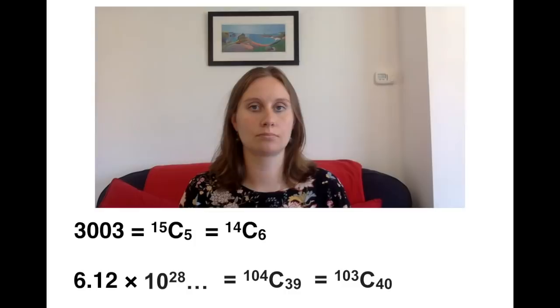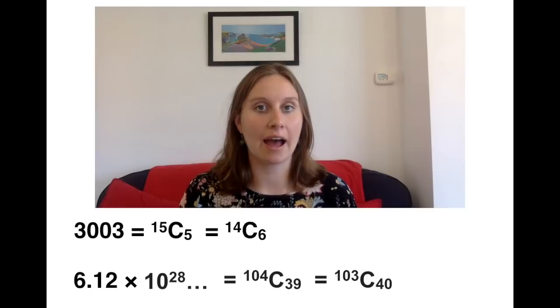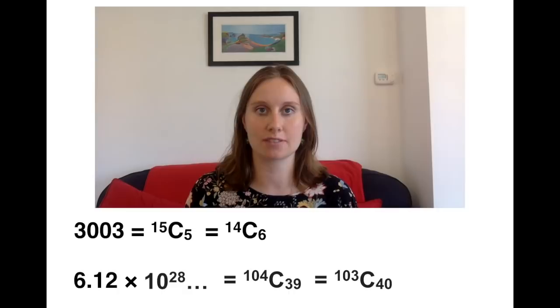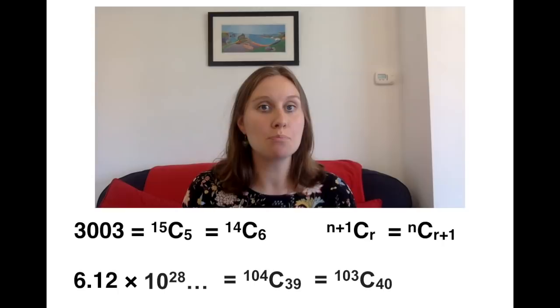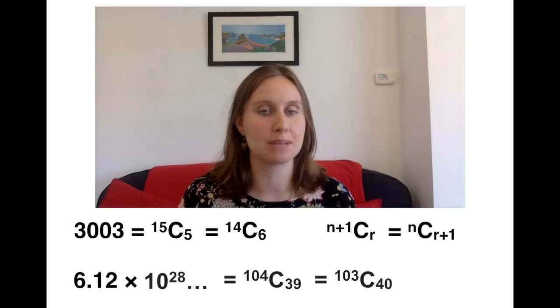And so those patterns appear in these two numbers. We can see that 3003 occurs at 15 choose 5, and then at 14 choose 6. So we're decreasing n by one and increasing r by one. And the same pattern appears for my favourite mega number down there. And that pattern can be expressed like this. And any numbers that fit that pattern, so that solve that equation, will appear at least six times in Pascal's triangle.